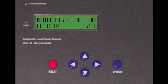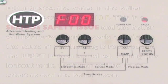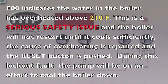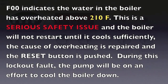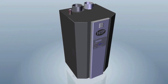If you are getting an F00 fault on your display, this fault occurs when the high limit switch has been exceeded above the boiler's established safety limit temperature of 210 degrees F. Be very cautious, as the heater temperature could be very high and could cause scalding temperatures and injury.